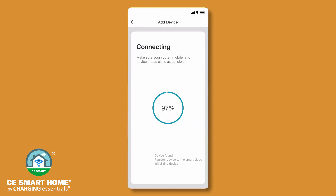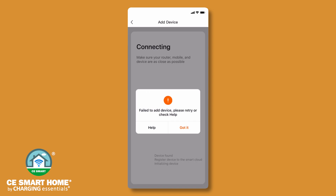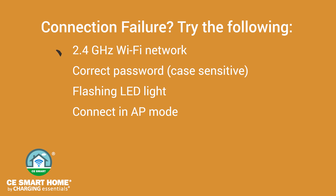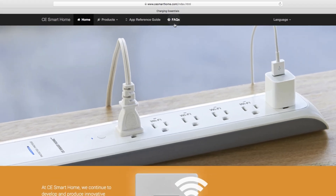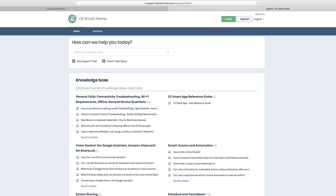If your app interface failed to connect the power strip to the CE Smart App, it means that the network connection failed. Make sure you are connected to a 2.4 gigahertz Wi-Fi network. Check that you have typed the correct password, remembering that passwords are case sensitive, and make sure that the LED light on the power strip is rapidly flashing when beginning connection. Then try connecting again. If you are still unable to connect, try connecting in AP mode. For additional assistance, visit the help center in the app or go to the FAQ tab on our website at www.cesmarthome.com.